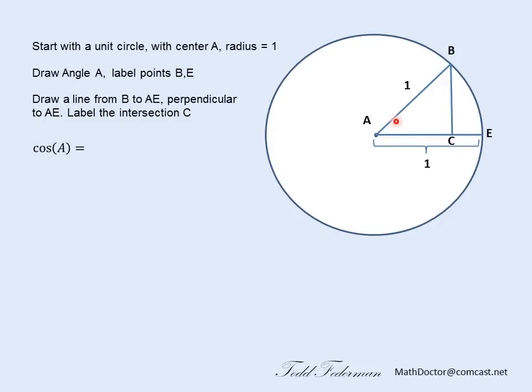Okay, let's take a look at this angle A, and let's figure out what the sine and cosine are. We know the cosine of an angle is the adjacent, which is AC, over the hypotenuse, which is AB. But here, AB has a length of one, so we can simplify the cosine of A as simply the length AC.